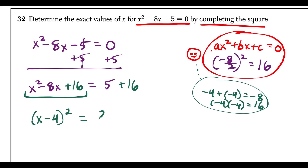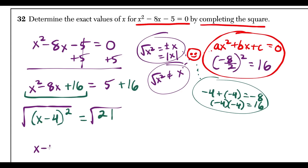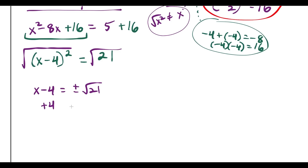Taking the square root of both sides: remember that the square root of x² is plus or minus x, not just x. So x − 4 = ±√21. Adding 4 to both sides gives x = 4 ± √21. A common mistake is forgetting the plus or minus — the square root of x² equals absolute value of x or ±x.